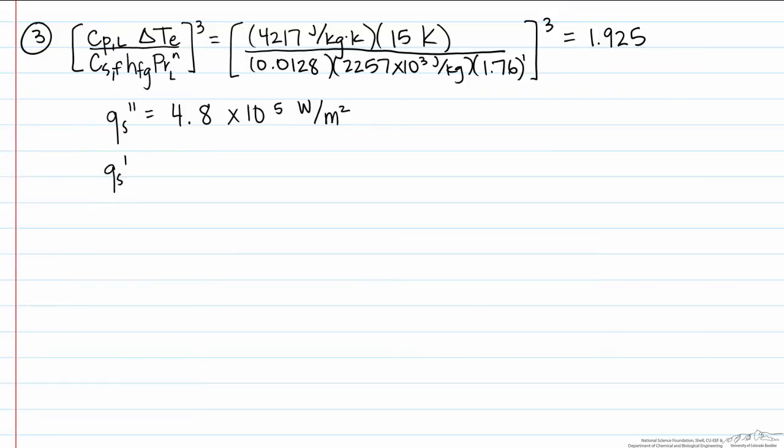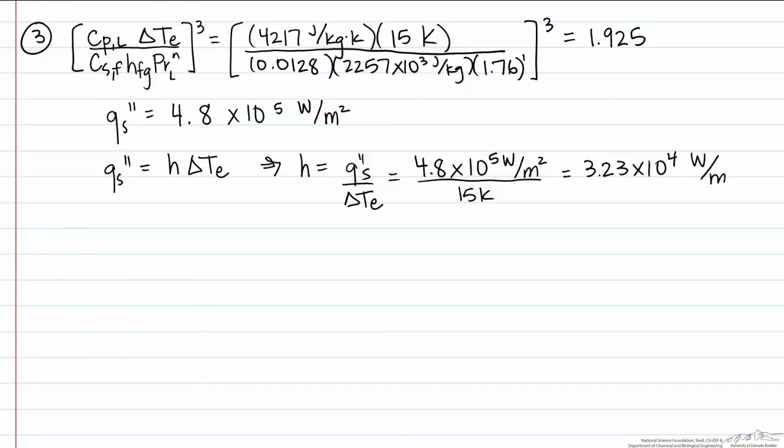Now we can use this value to find our heat transfer coefficient, such that our heat transfer coefficient is equal to this flux divided by our T sub e, or our difference in temperature, and that's going to equal 3.23 times ten to the fourth watts per meter squared k.